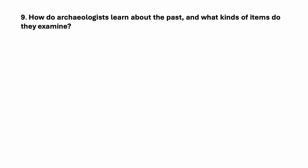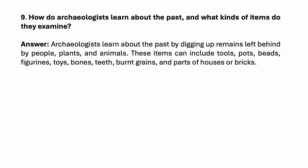How do archaeologists learn about the past and what kinds of items do they examine? Archaeologists learn about the past by digging up remains left behind by people, plants and animals. These items can include tools, pots, beads, figurines, toys, bones, teeth, burned grains and parts of houses or bricks.